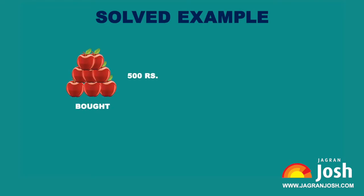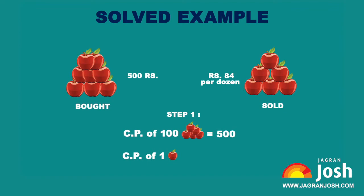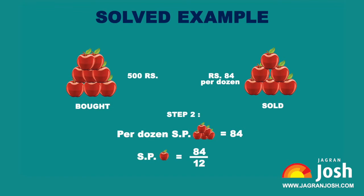Solved example to understand the percentage profit and loss formula: 100 apples are bought at the rate of rupees 500 and sold at the rate of rupees 84 per dozen. Step 1: Given that CP of 100 apples = 500, then CP of one apple = 500 / 100 = 5. Step 2: Given that SP per dozen = 84, then SP of one apple = 84 / 12 = 7.